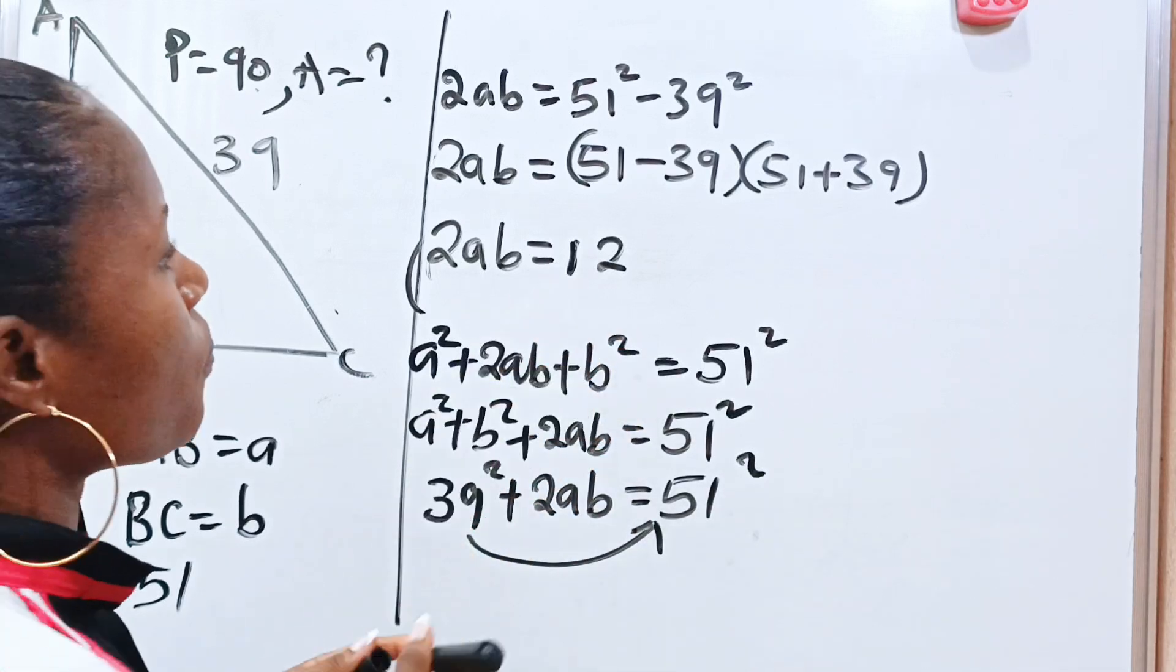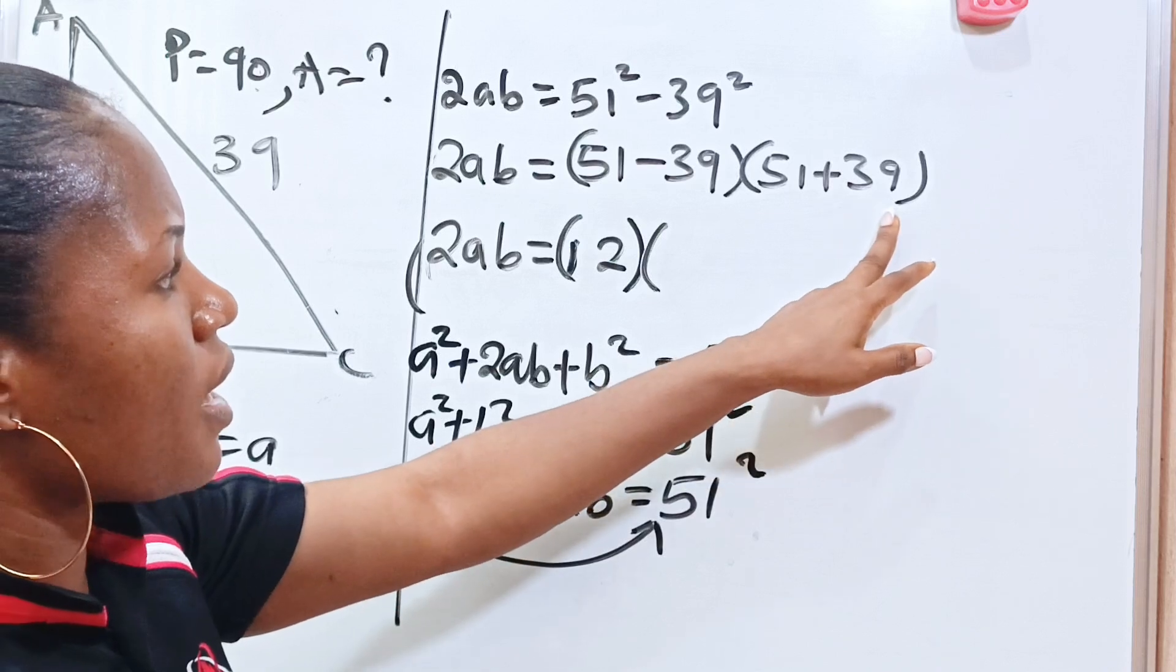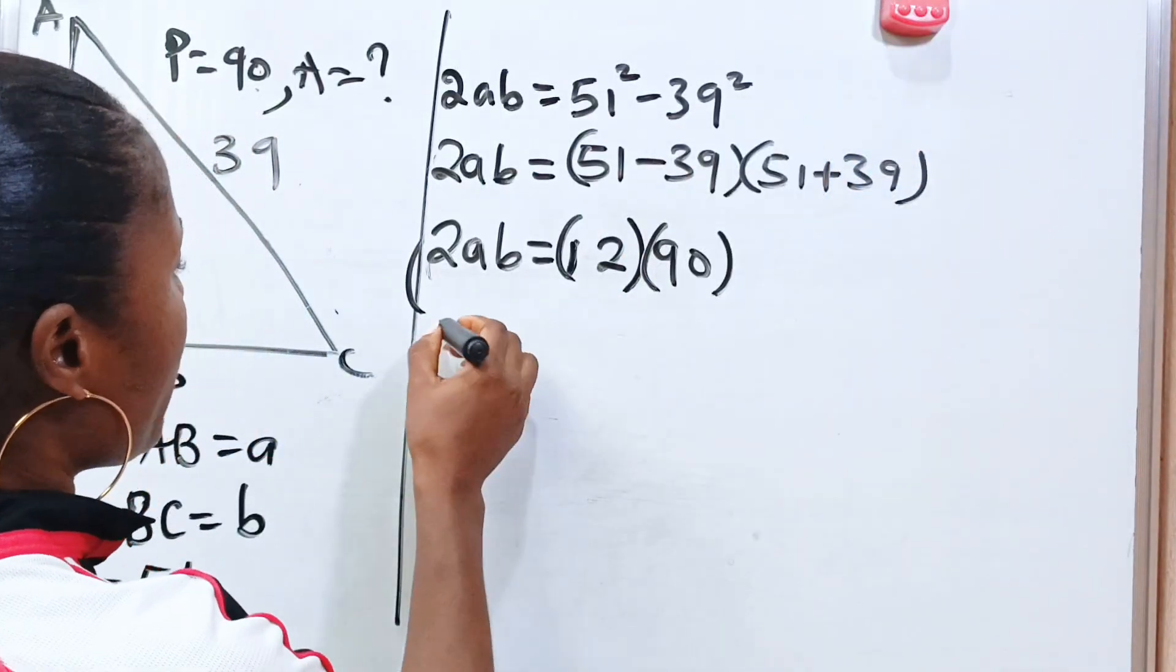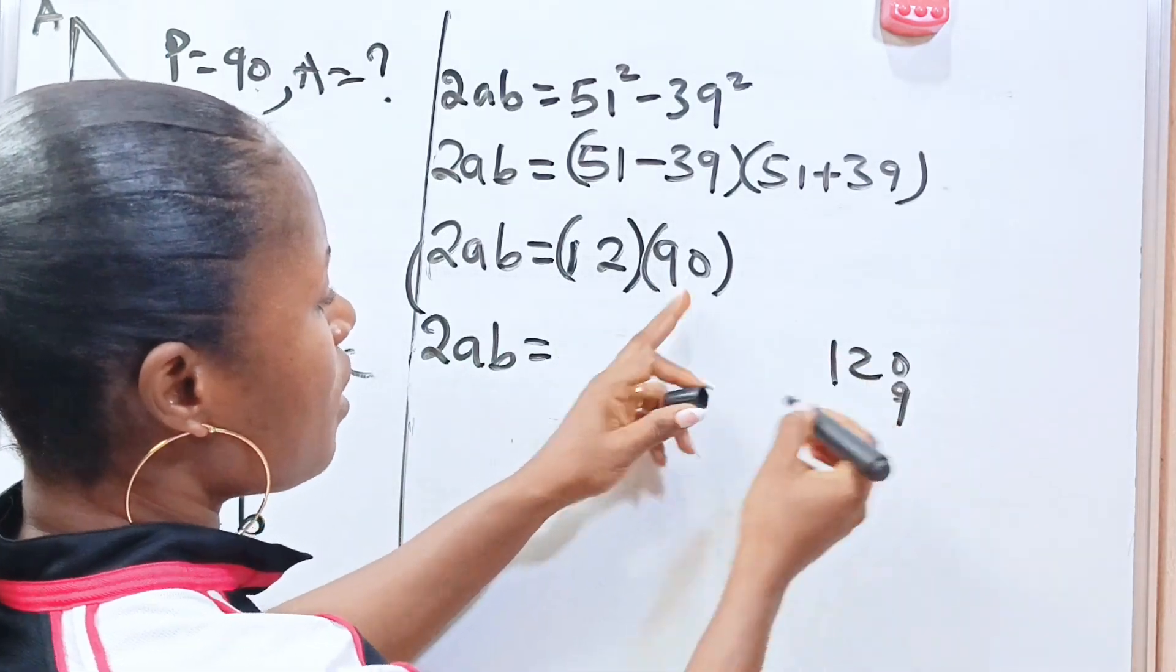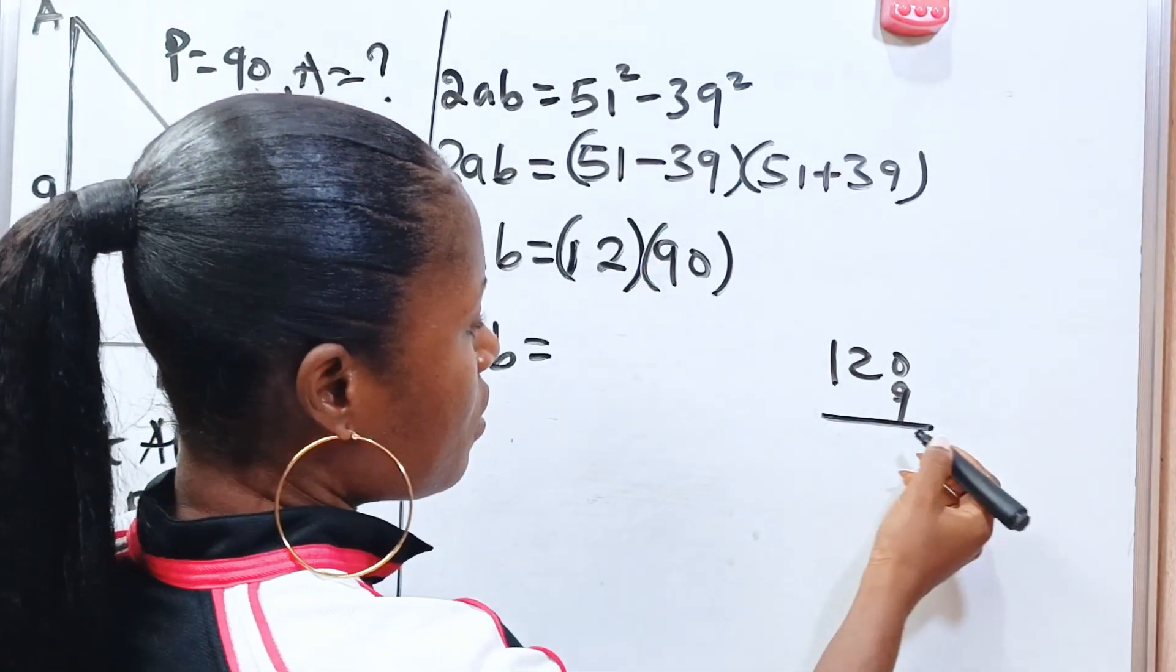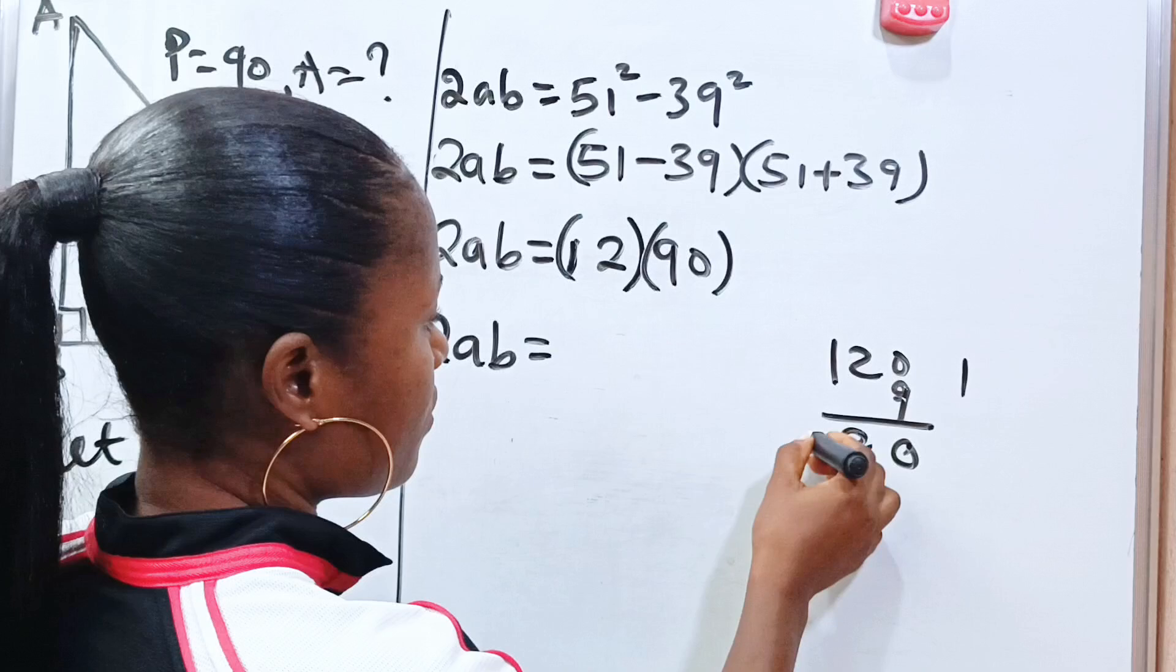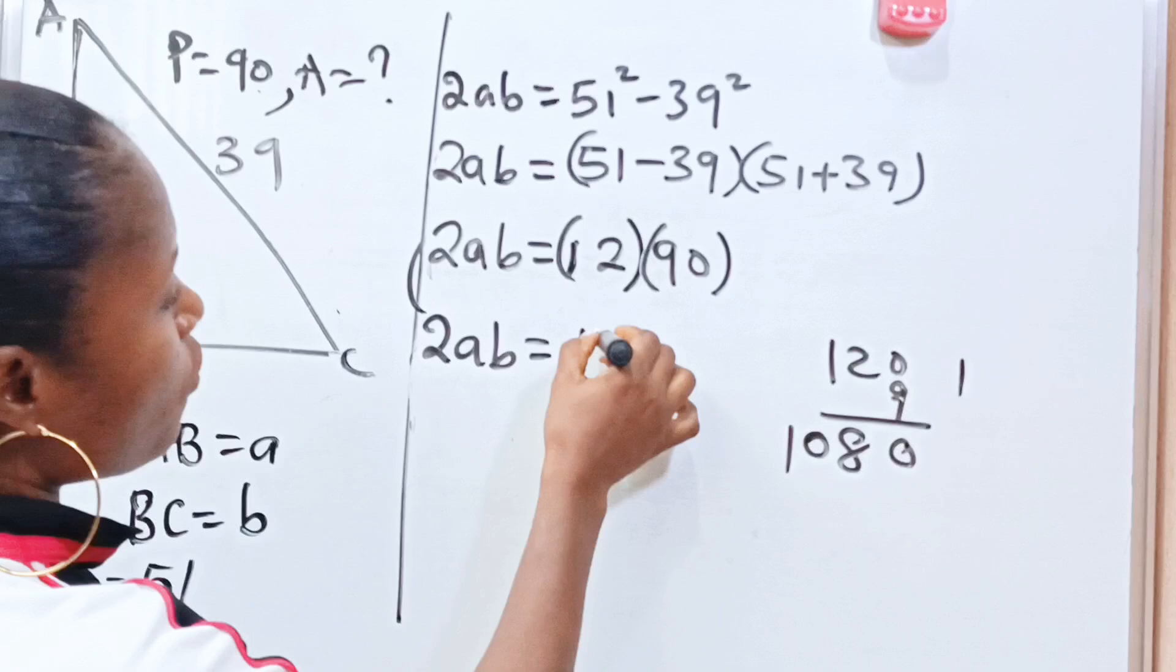So we have 2AB is equal to 120 times 9, because 12 times 90 is the same as 120 times 9. 9 times 0 is 0, 9 times 2 is 18, 9 times 1 is 9, plus 1 is 10. So we have 1080.